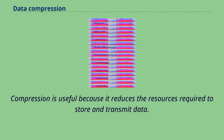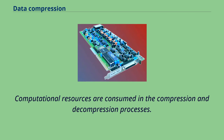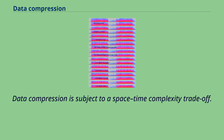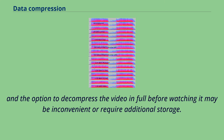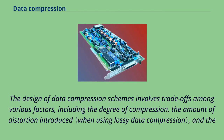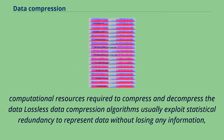Compression is useful because it reduces the resources required to store and transmit data. Computational resources are consumed in the compression and decompression processes. Data compression is subject to a space-time complexity trade-off. For instance, a compression scheme for video may require expensive hardware for the video to be decompressed fast enough to be viewed as it is being decompressed, and the option to decompress the video in full before watching it may be inconvenient or require additional storage. The design of data compression schemes involves trade-offs among various factors, including the degree of compression, the amount of distortion introduced, and the computational resources required to compress and decompress.